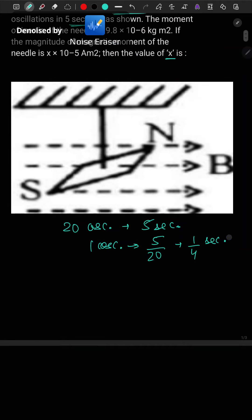So time taken for one oscillation, which is time period, is given by 5 by 20, which equals 1 upon 4 second. Now we know the formula of time period which is 2π under root I upon MB.